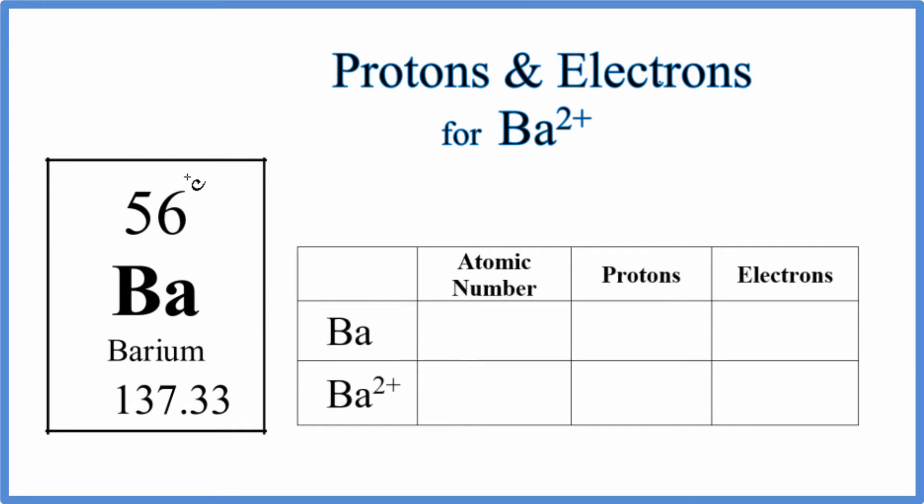Barium on the periodic table has an atomic number of 56, and that atomic number tells us the number of protons per barium. So we know the atomic number is 56, and the number of protons is going to be the same thing, 56.